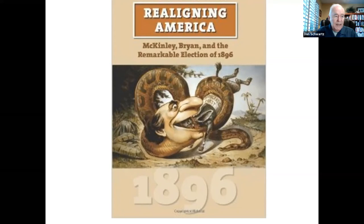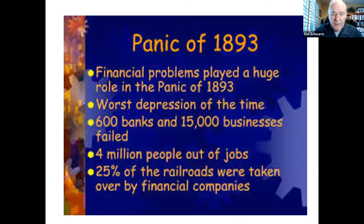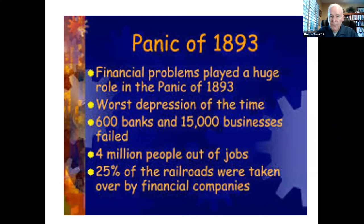In the 1890s, the American people were deeply divided over the nation's monetary system. Should the United States have a currency backed only by gold, or should it be backed by both gold and silver? This debate was a result of the Panic of 1893, the worst depression in American history up to that time. 600 banks failed, 15,000 businesses failed, 4 million people were unemployed, and a full quarter of all the railroads in the country were failing.